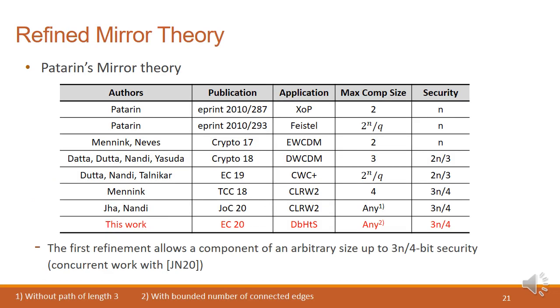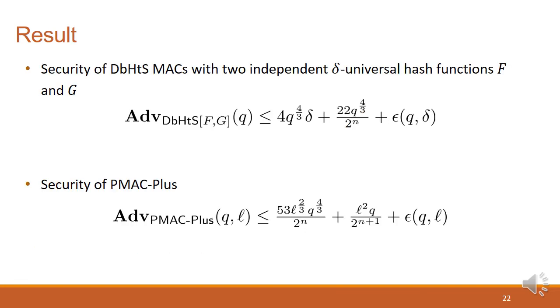This is the brief history of the applications of Patarin's mirror theory. After the first version of the mirror theory was suggested in 2010, many variants of the mirror theory have been proposed and also have been applied on various constructions. Here, we want to emphasize that this is the first refinement of mirror theory that allows a component of an arbitrary size and can be used to prove 3N over 4-bit security, although there is a concrete work done by Ashwin Jha and Mridul Nandi.